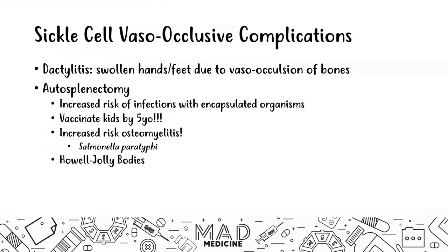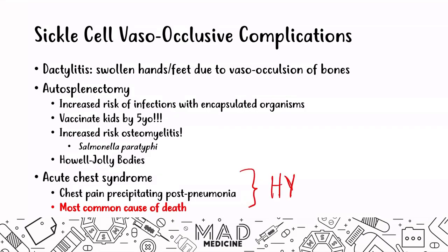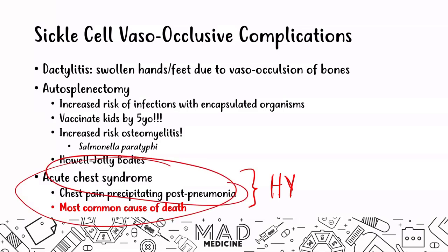Finally, patients with sickle cell anemia can present with acute chest syndrome — chest pain precipitated post-pneumonia. This is the most common cause of death in patients with sickle cell anemia. Very high yield: acute chest syndrome is the most common cause of death in sickle cell anemia.